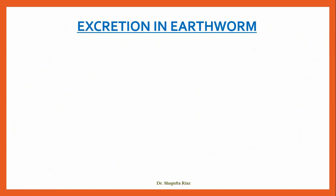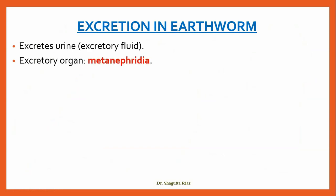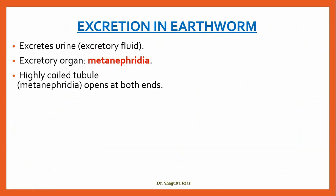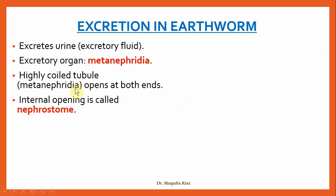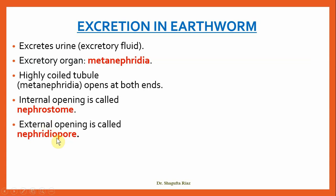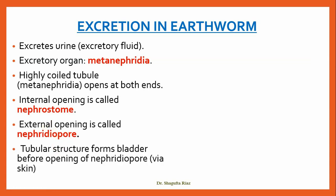The next example is the earthworm, which is an example of segmented worms. The excretory product is urine, or excretory fluid, and the excretory organ of the earthworm is metanephridia. Its structure is a highly coiled tubule which forms the metanephridia and opens at both ends. The internal opening is called the nephrostome, while the external opening is called the nephridiopore.